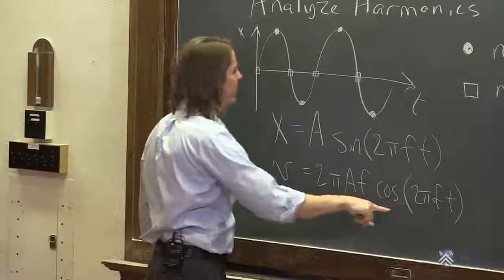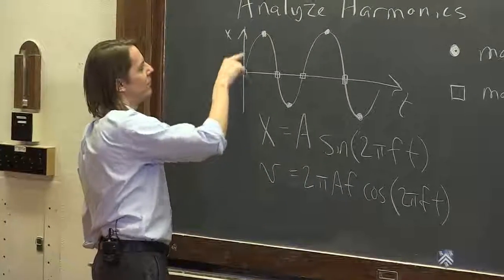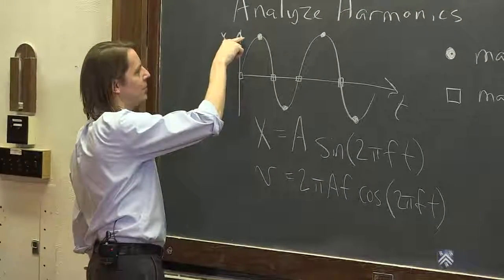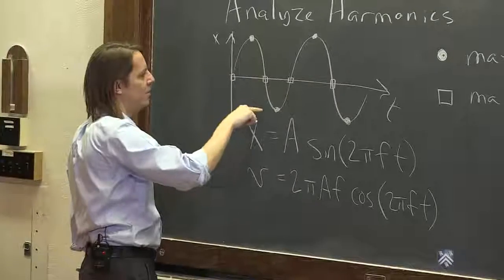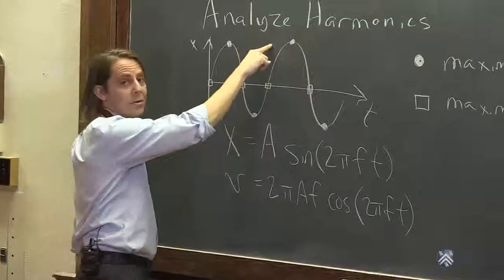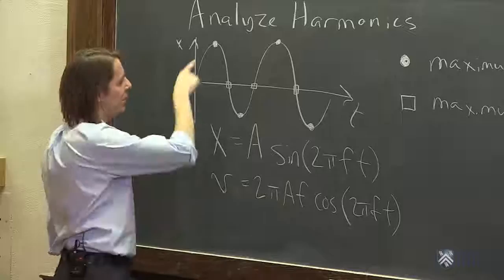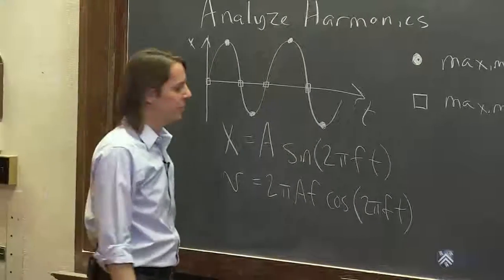And if you were to plot this function, this is a cosine. It would have a maximum here. Sure enough, it would have a maximum here, and it would go down, and it would have a minimum here. And it would go up, and it would have a maximum here. So this does describe, in the right way, the maximum speed.